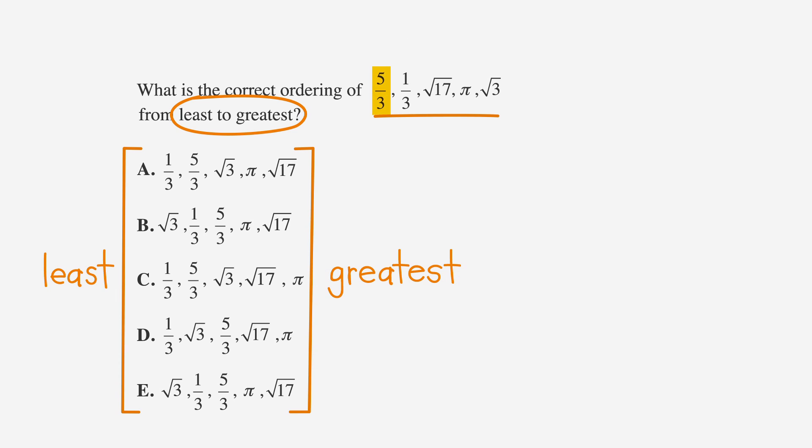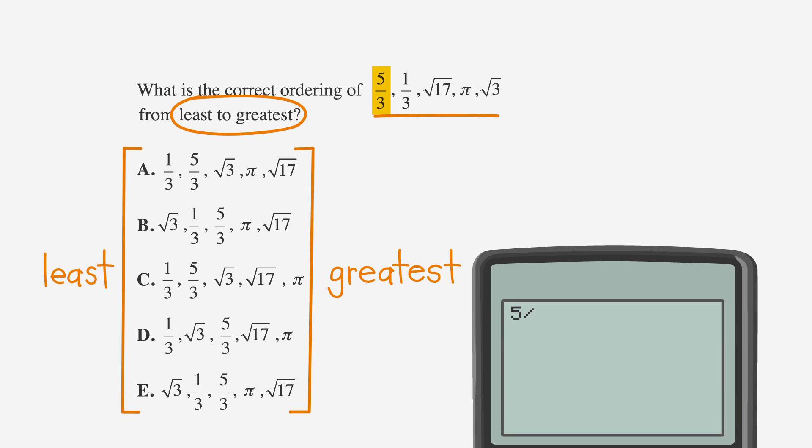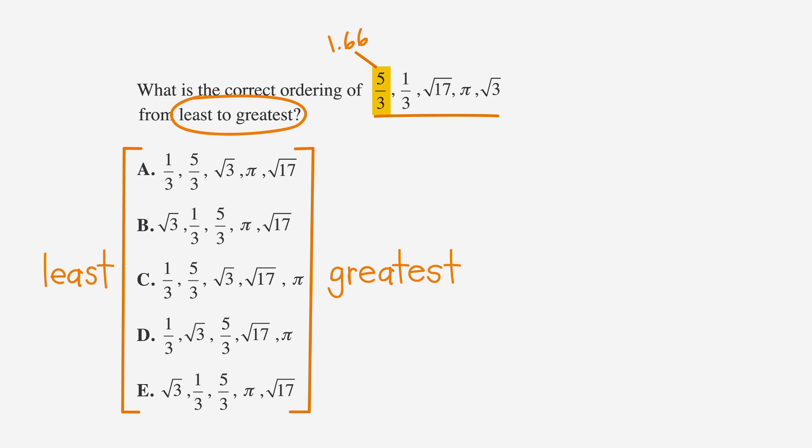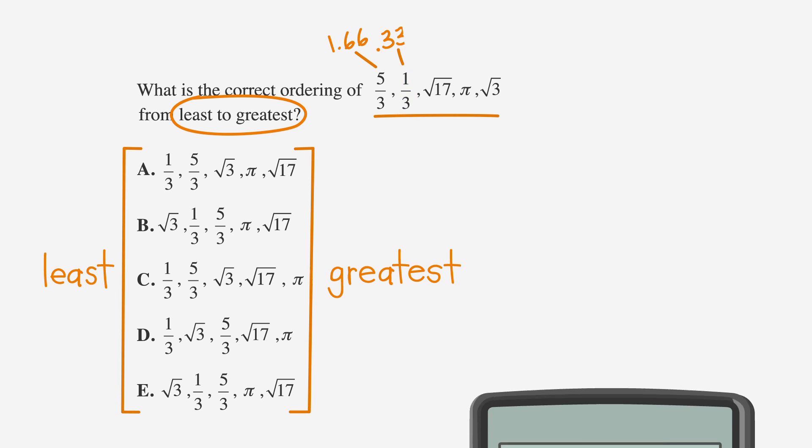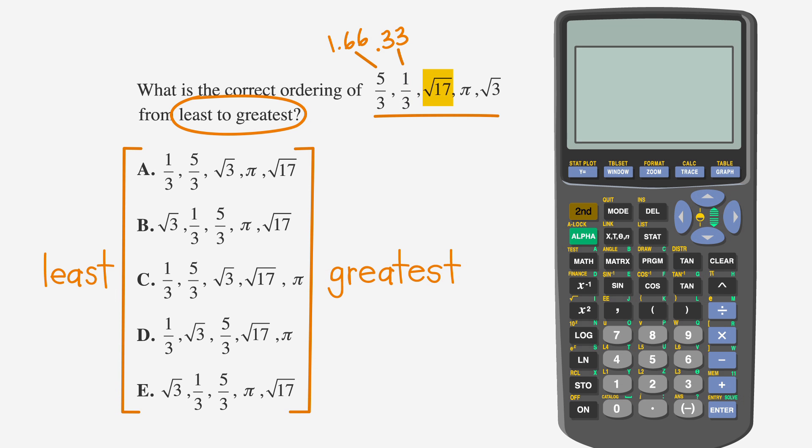We'll start with 5 thirds. If you type in 5 divided by 3 and hit enter, you get 1.66 repeating. Write these decimals down so you don't need to keep them all in your head. Now input 1 divided by 3 to find that 1 third is 0.33 repeating. To find the decimal equivalent of the square root of 17, we type the second key, then square root, then 17, and then enter to find that the square root of 17 is approximately 4.123.